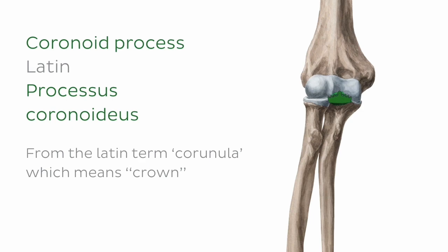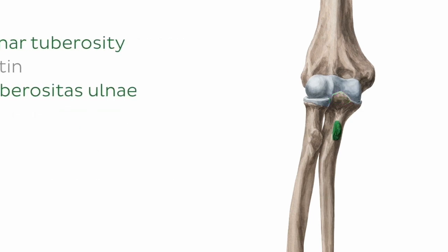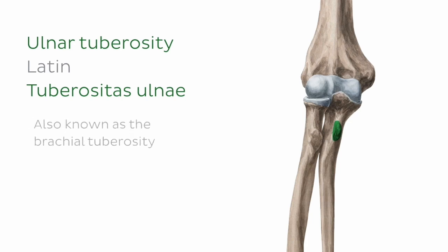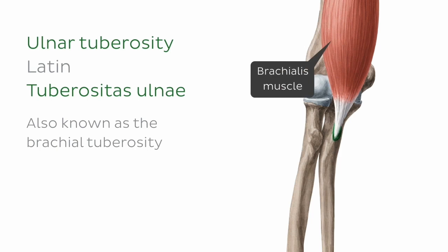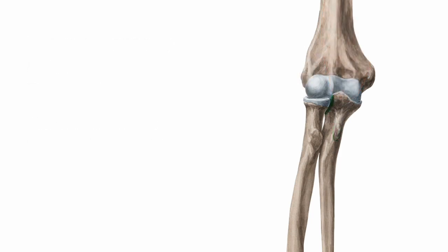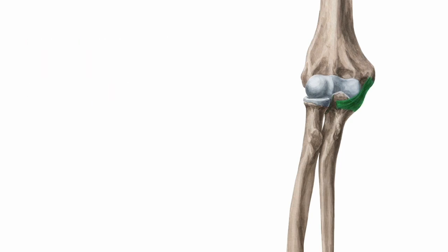Immediately distal to the coronoid process is a roughened depression known as the ulnar tuberosity, also known as the brachial tuberosity, as it gives attachment to the brachialis muscle. And just lateral to this, we have the radial notch of the ulna, which accommodates the articular circumference of the radial head.